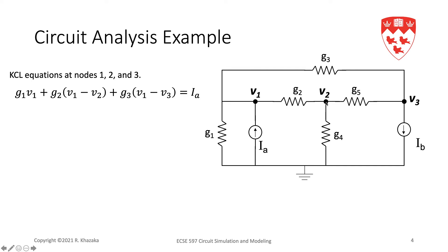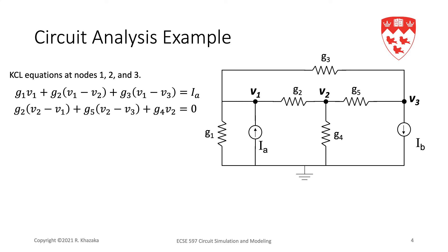At node 2, the current in G2 is (V2 − V1)·G2; the current in G5 is (V2 − V3)·G5; and the current in G4 is V2·G4. The right-hand side is 0 because there are no independent sources connected to this node. At node 3, we have G3·(V3 − V1) and G5·(V3 − V2), and on the right-hand side the current entering through the independent source is −IB.